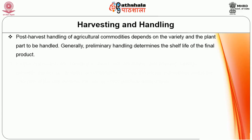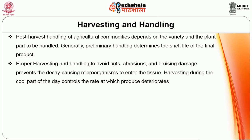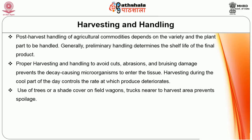Post-harvest handling of agricultural commodities depends on the variety and the plant part to be handled. Generally, preliminary handling determines the shelf life of the final product. Proper harvesting and handling to avoid cuts, abrasions and bruising damage prevents decay-causing microorganisms from entering the tissue. Harvesting during the cold part of the day controls the rate at which produce deteriorates. Use of shade cover in field wagons and trucks nearer to the harvest area prevents spoilage.